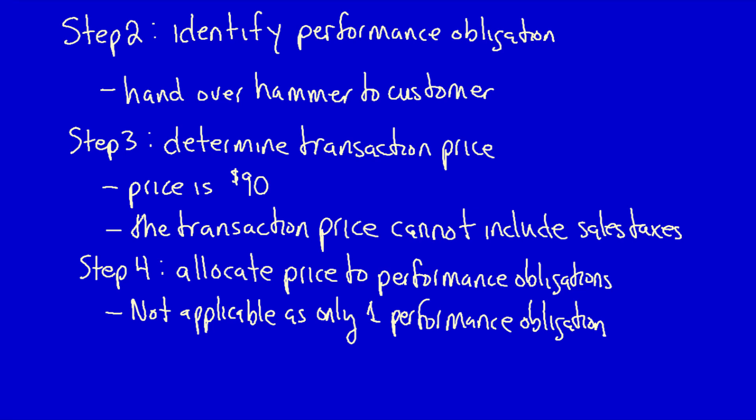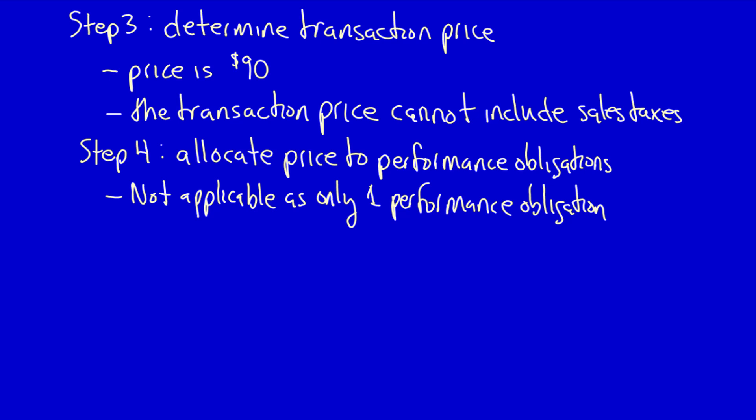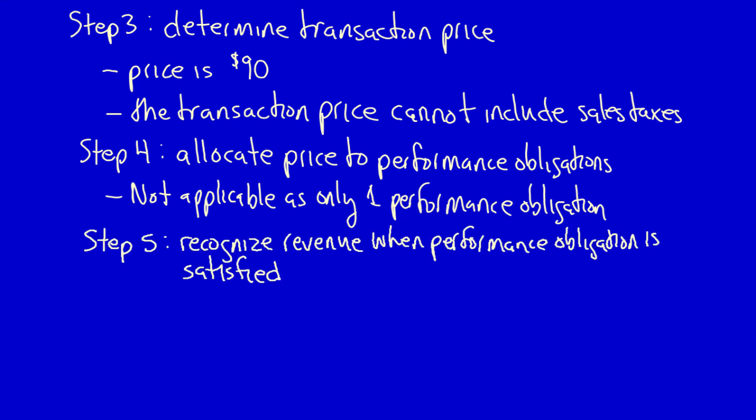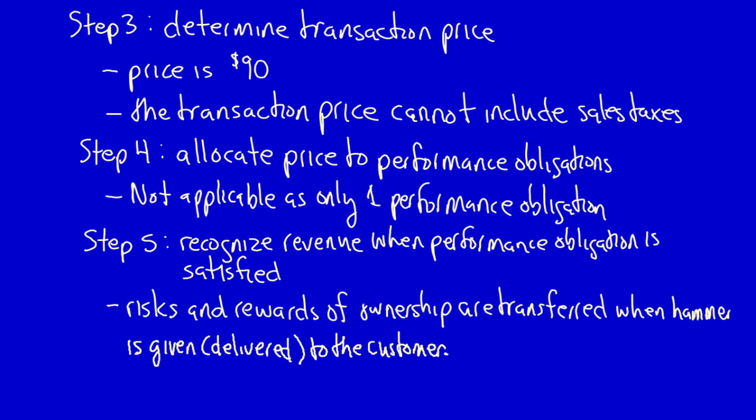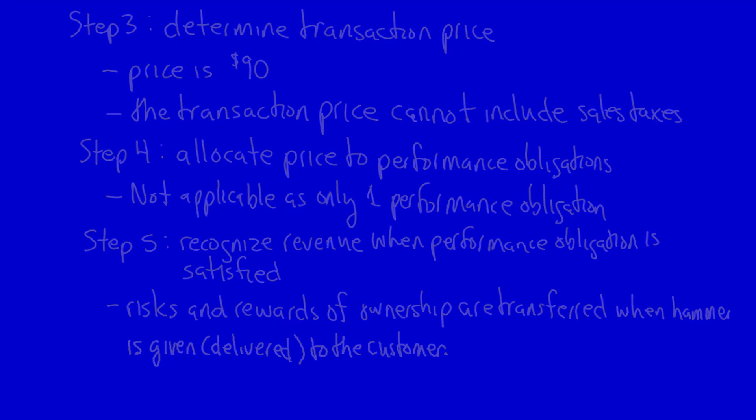Step five: recognize revenue when the performance obligation is satisfied. This happens when there has been a transfer of control of the hammer. The transfer of control in this case occurs because the risks and rewards of ownership have transferred to the customer the moment the hammer is handed over to the customer — that's when we can recognize revenue.